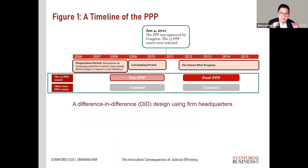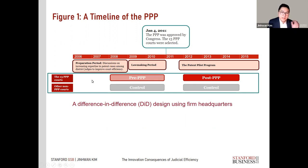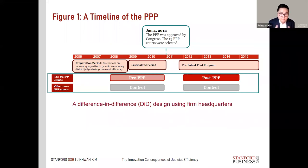At a high level, our research design is a difference-in-differences approach. We compare firms headquartered in the 13 PPP courts against all other firms in the other 81 control districts before and after 2011. The post period runs from 2012 to 2014, giving firms at least a year to respond to the regulation. We use a symmetric pre-window from 2008 to 2010, leaving out 2011 — when the PPP was first proposed — as a benchmark.